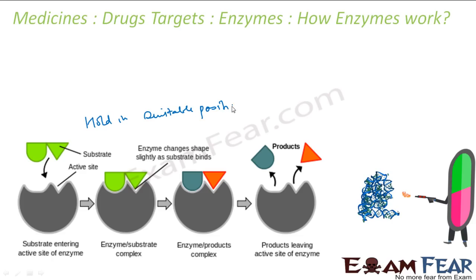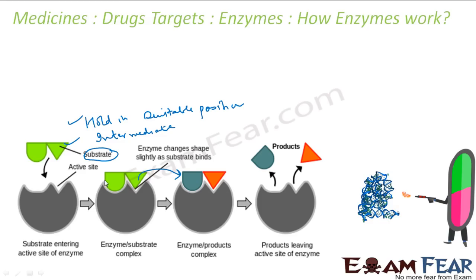The second thing is that when the substrate binds to the enzyme, it also forms an intermediate. This intermediate can easily be broken, whereas the original substrate may not be easily broken on its own. So the enzyme first binds the substrate at its active site, and second, forms an intermediate that can easily be broken.